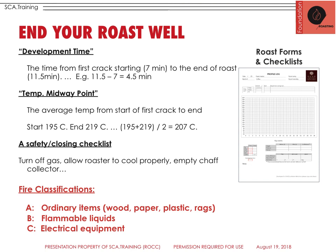For example, if your roast was 11 and a half minutes and your first crack started at 7 minutes, you just take 11.5 minus 7 and you'd have a 4 and a half minute development time. You should be able to calculate something like that on your practical and written exam if you're asked to calculate development time.